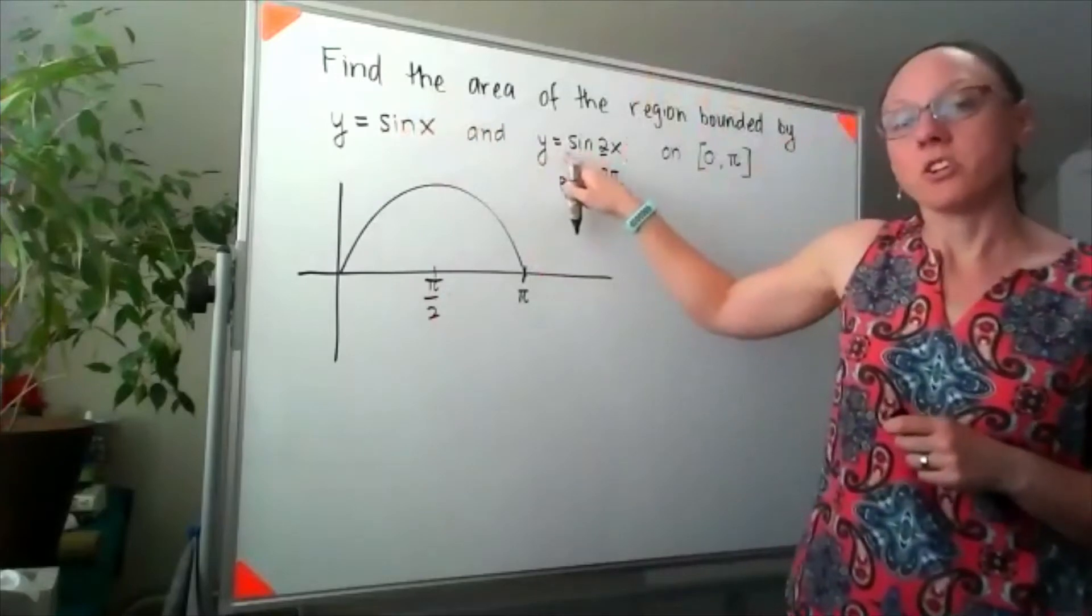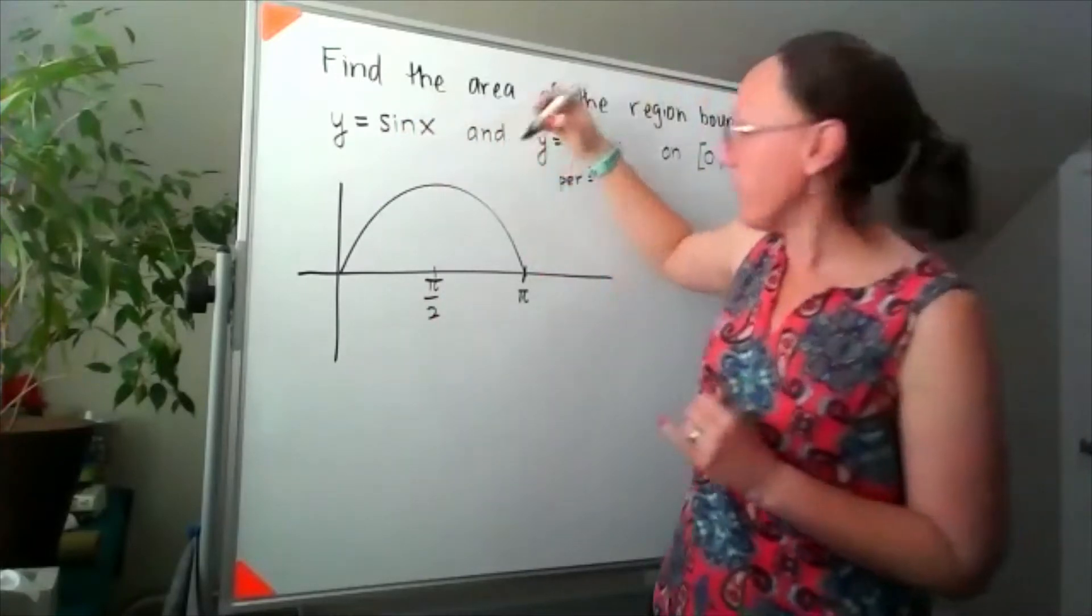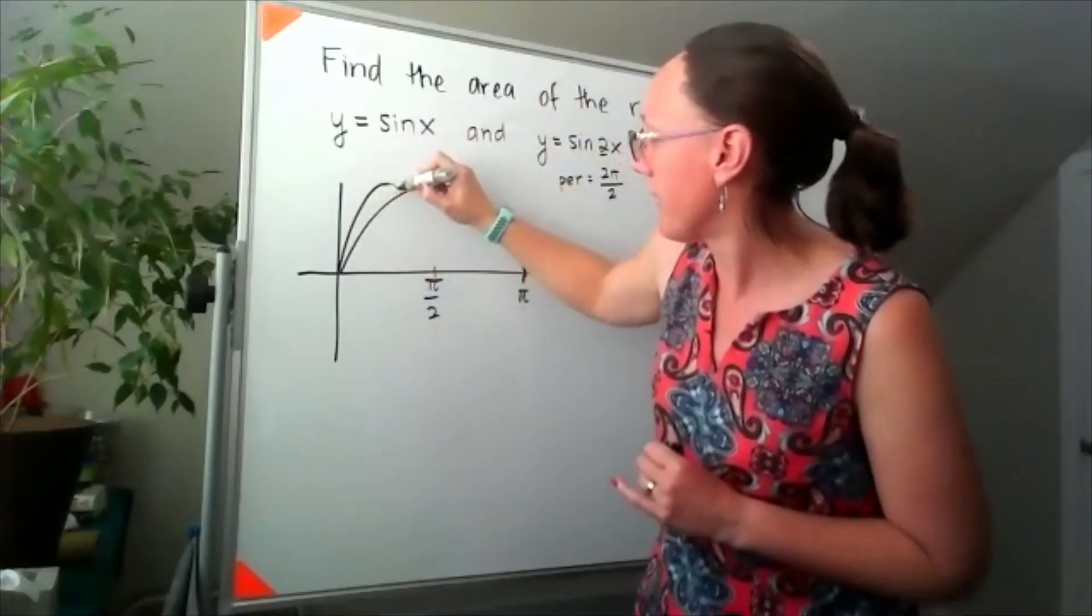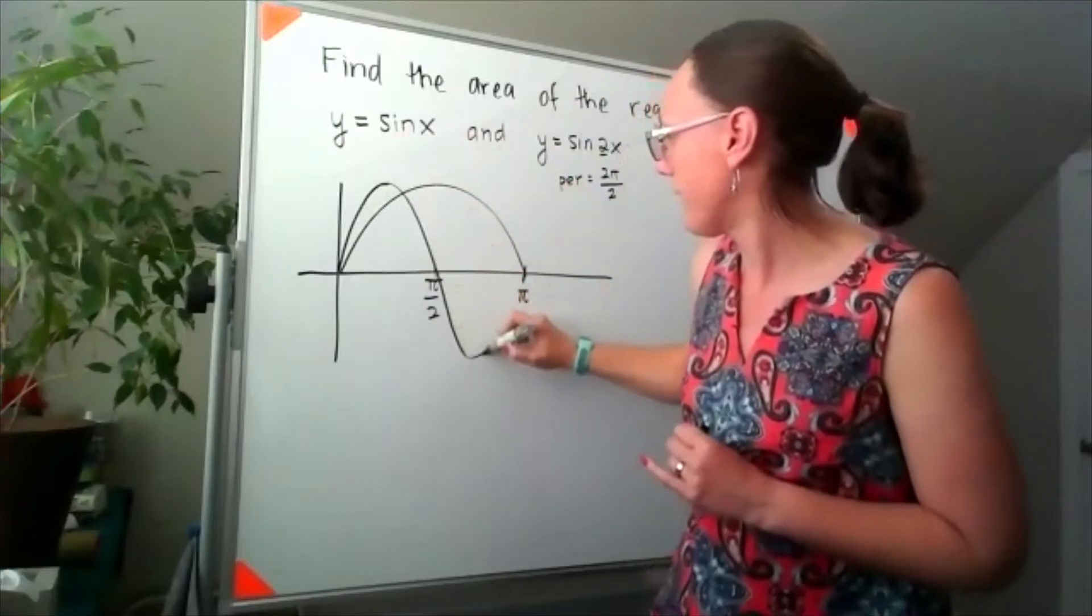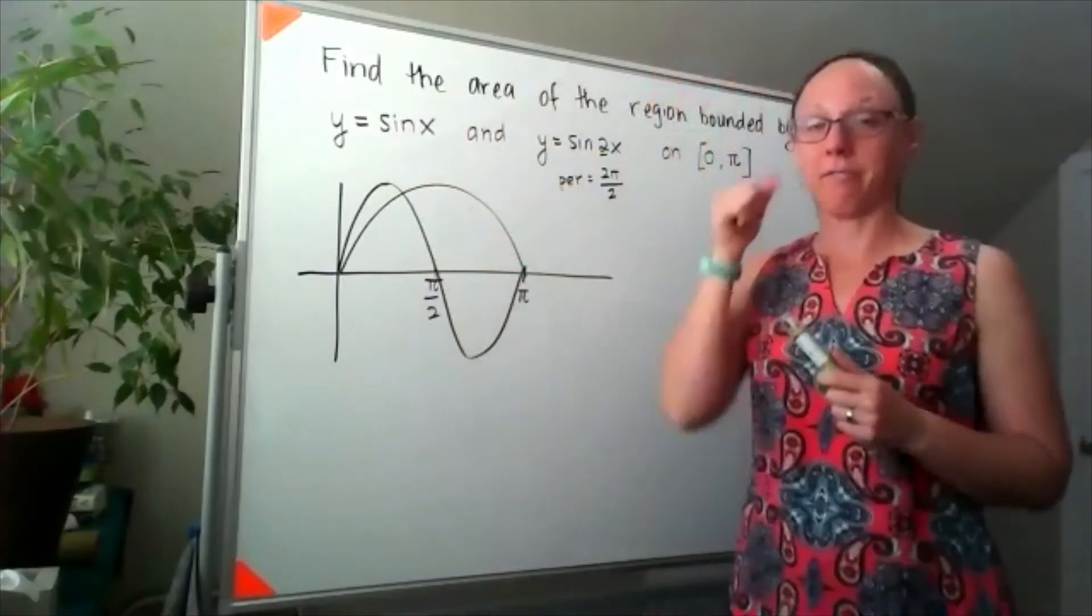We haven't changed the amplitude - there's still a 1 in front of that sine, so it's still going to get up to that same height. And this is about what our graph looks like.